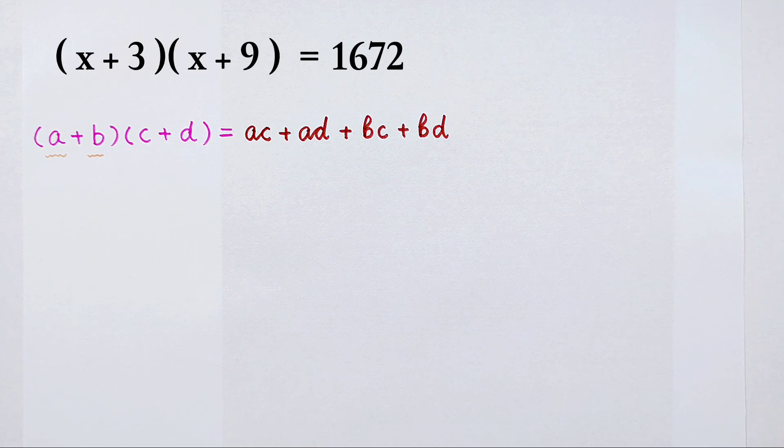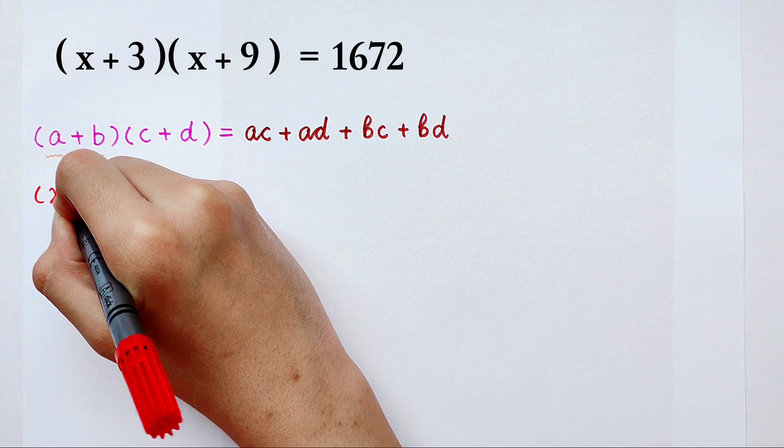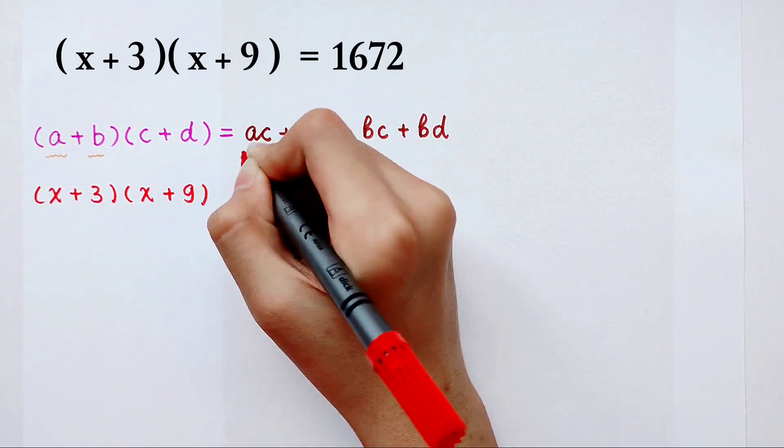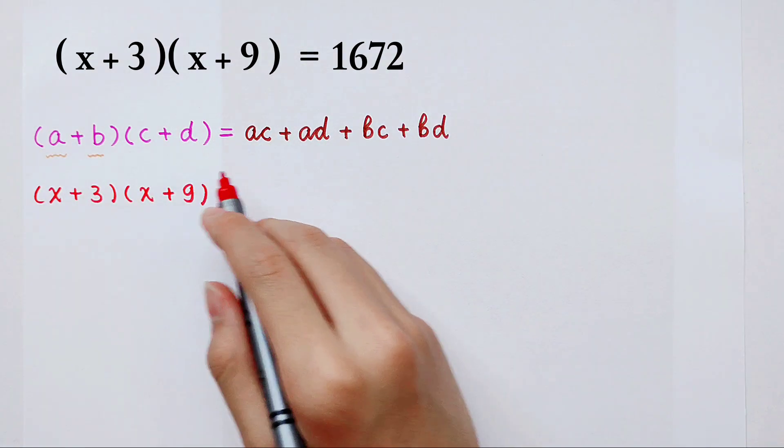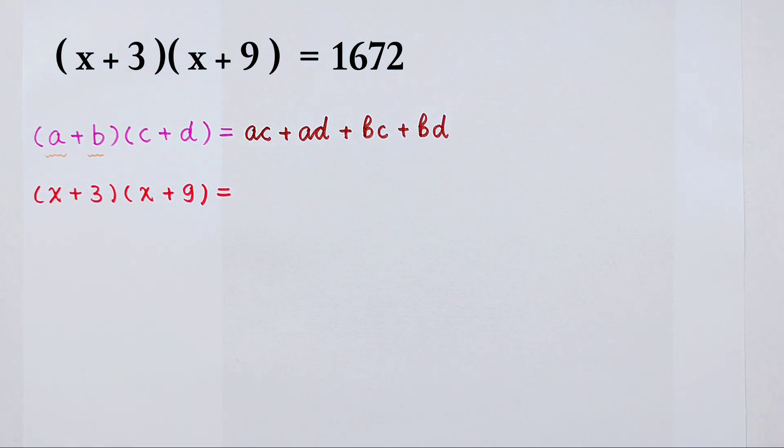And now what's on the left side? It is x plus 3 then times x plus 9. And now we expand it from this formula: x plus 3 then times x plus 9.